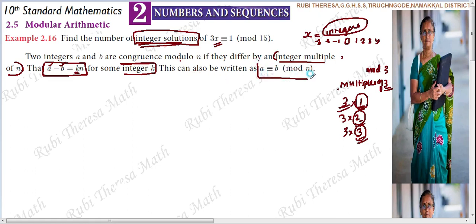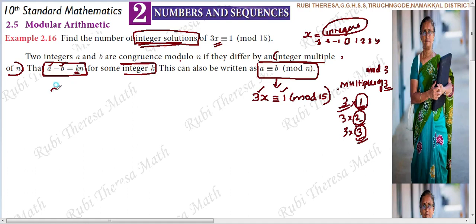If a is congruent to b mod n, we compare to 3x is congruent to 1 mod 15. So your solution starts here: 3x is congruent to 1 mod 15. We have to find the difference, so 3x minus 1 equals k times n.